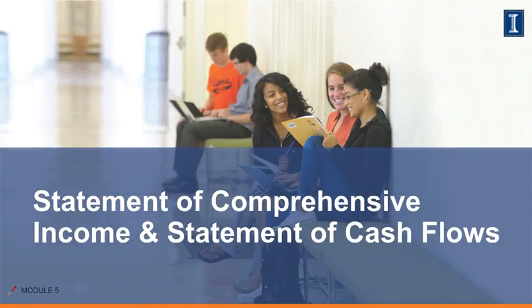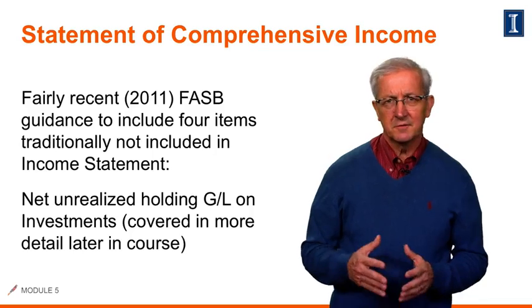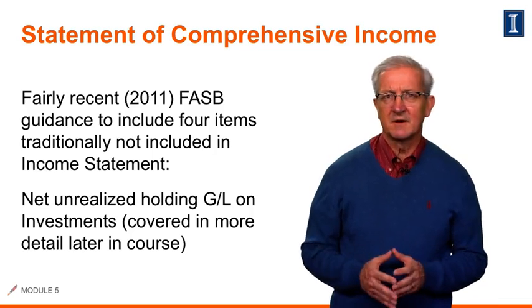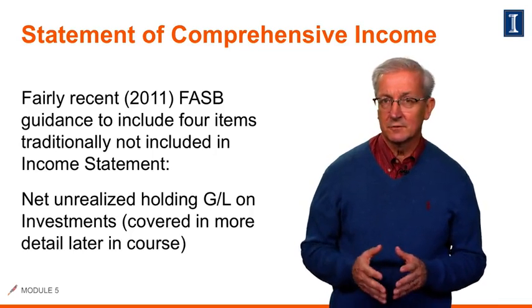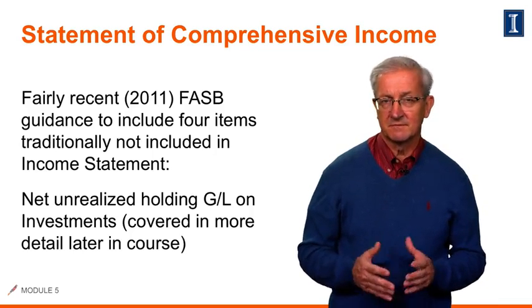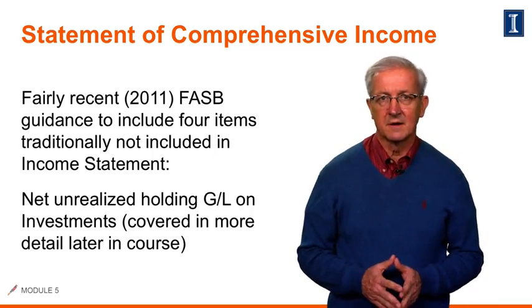Let's discuss the remaining financial statements: the statement of comprehensive income as well as the statement of cash flows. Basically, there are four types of items that we must include in this concept of comprehensive income.